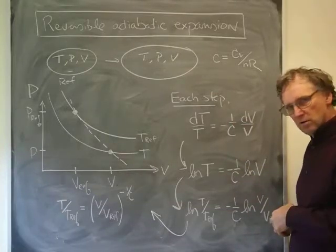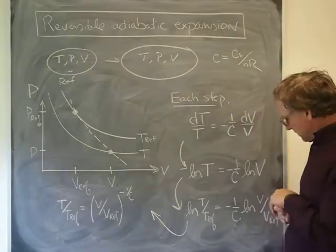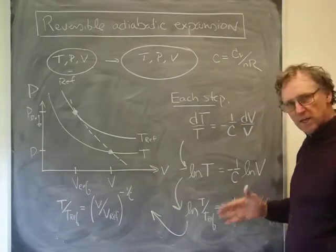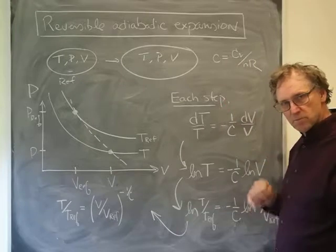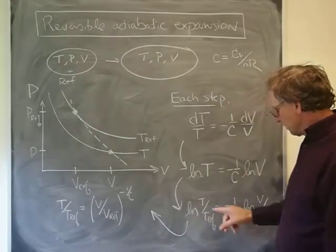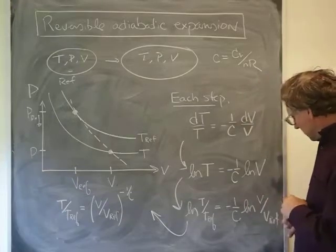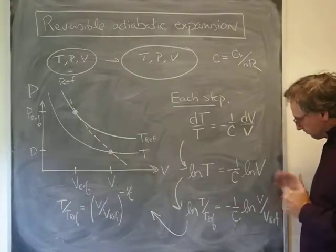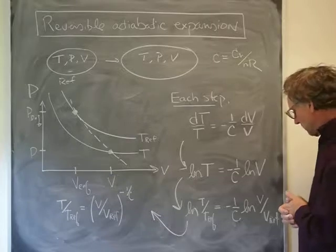Now for the definite integrals, once we say we're going to evaluate from the starting to finishing points, that log T will turn into log T over T ref. We have minus c log of V over V ref. Nothing surprising here I hope.